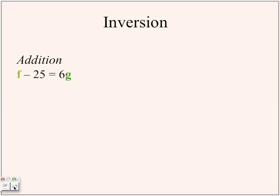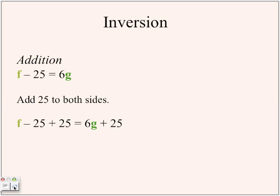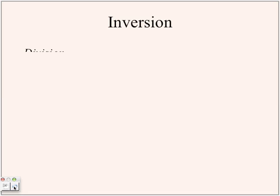For f minus 25 equals 6g, you're going to add 25 to both sides: f minus 25 plus 25 equals 6g plus 25. So f equals 6g plus 25. Now you're going to divide in the next equation.